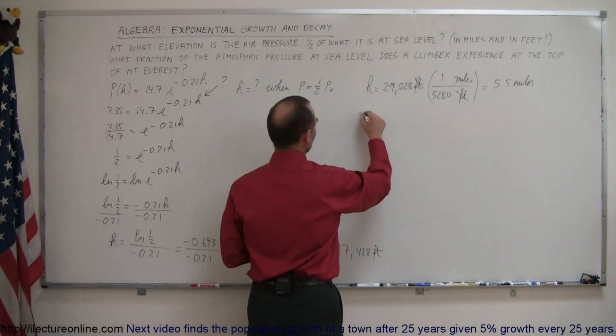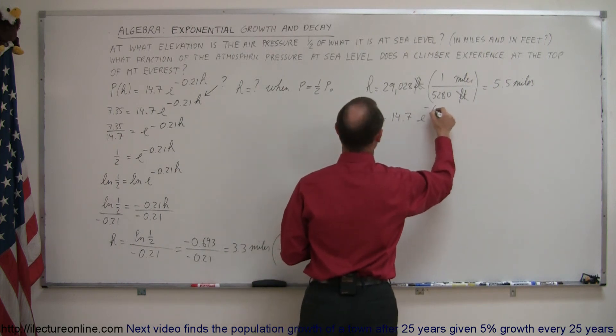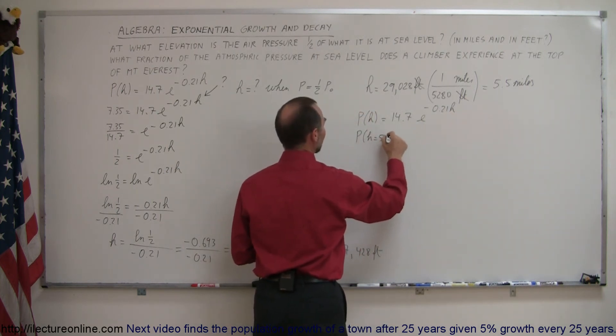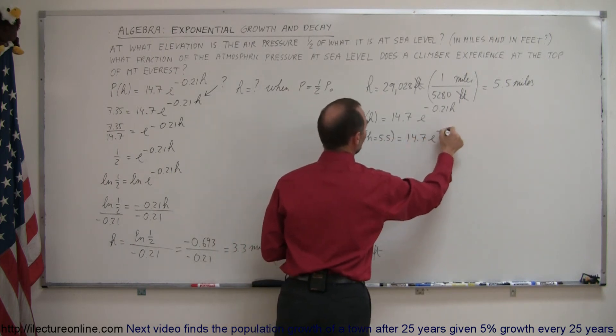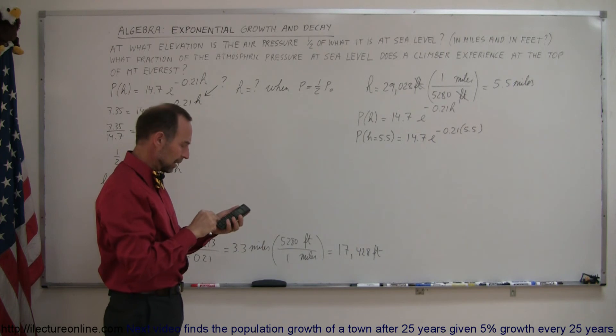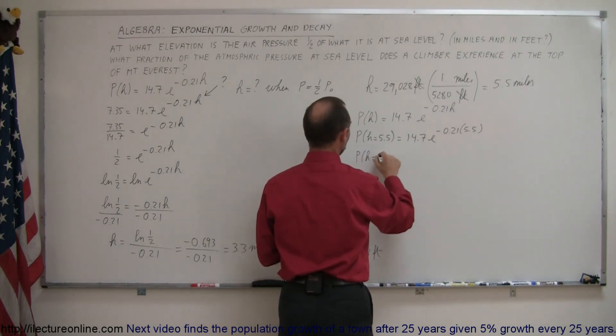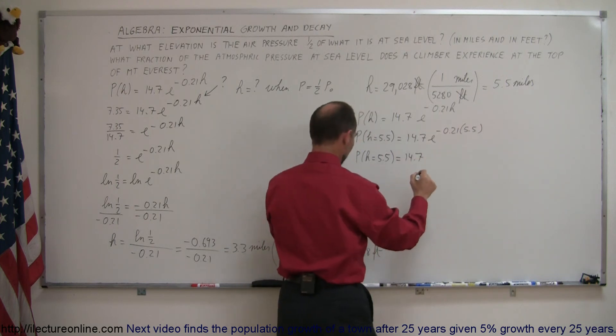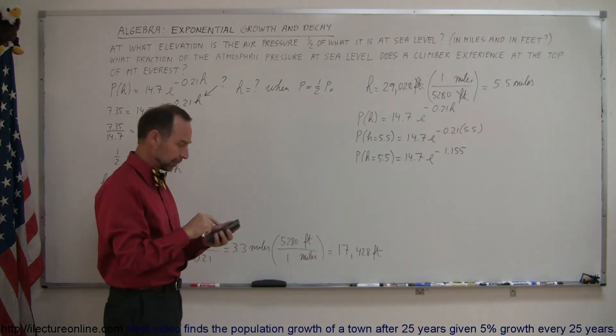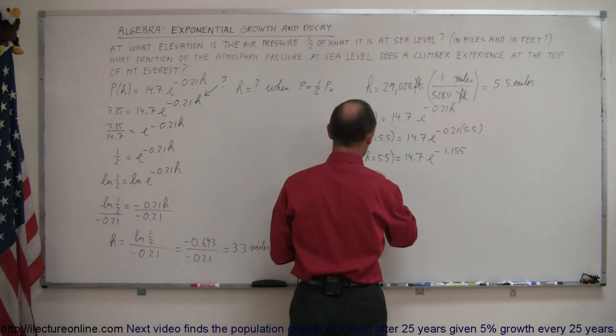Now let's plug that into our equation. The pressure as a function of height is P(h) = 14.7 pounds per square inch times e^(-0.21h). We're going to plug in 5.5 for h. So P(5.5) = 14.7e^(-0.21×5.5). Multiply the exponent: -0.21 times 5.5. The pressure when the height is 5.5 miles is 14.7 times e^(-1.155), which equals 4.63 pounds per square inch.